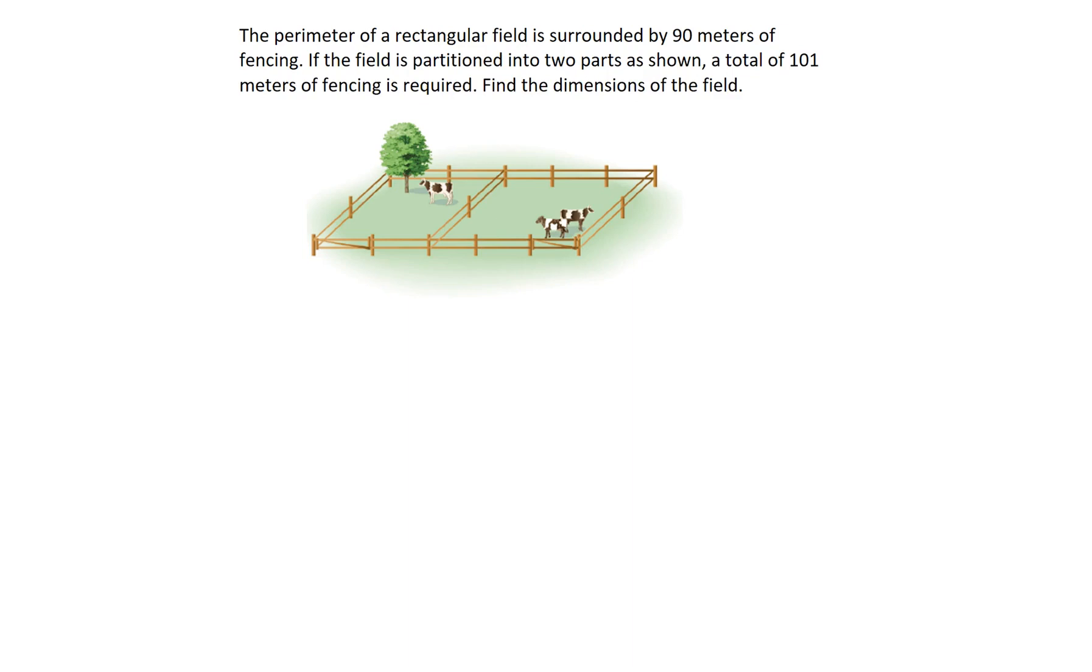So there are two parts to the problem. The first is that you've got this rectangular field, so let's just draw in the field here. This is our rectangular field, and we're looking for the dimensions. Let's call the length x, and then call the width, that is the shorter side, call it y.